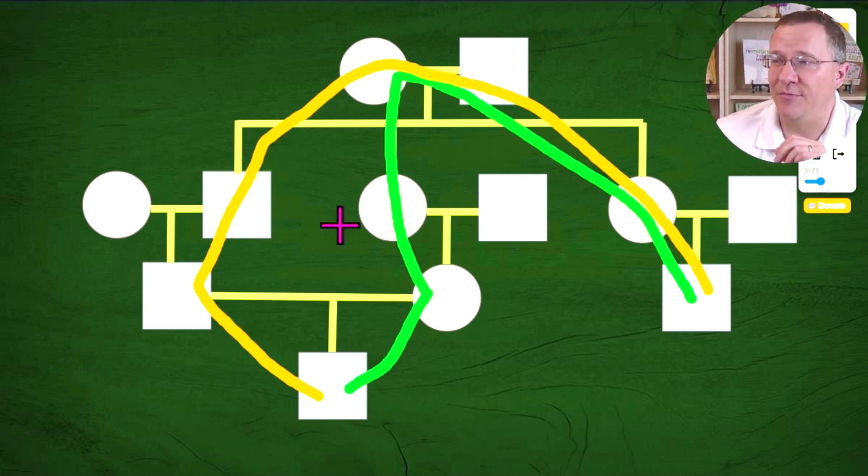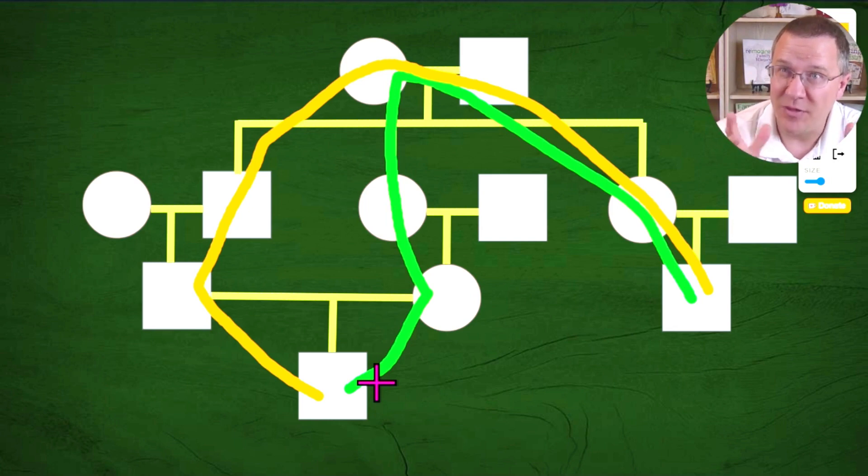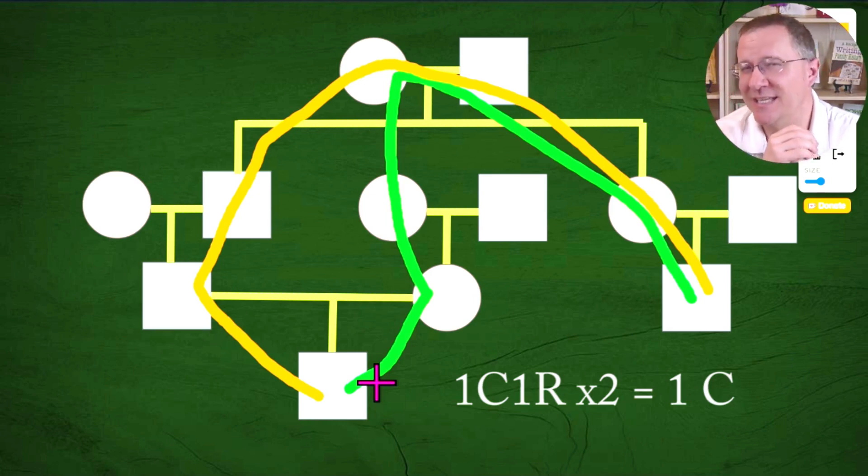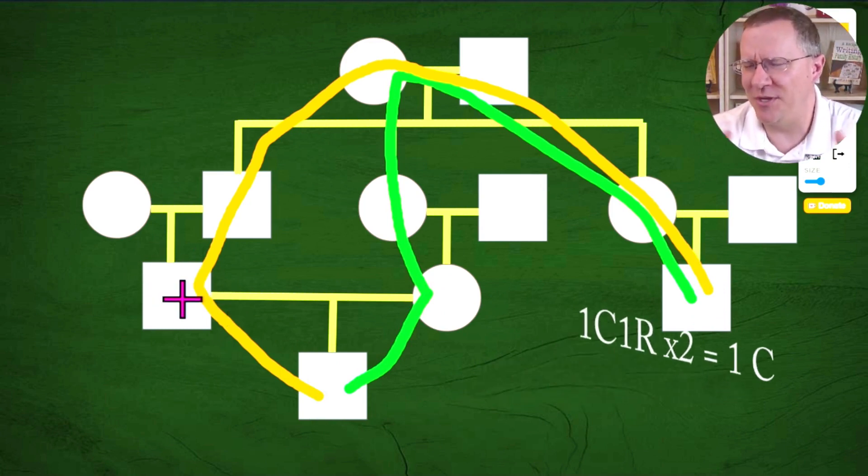And so this is where trying to keep these relationships separate can get a little confusing. In this case, we have two lines of relationship between our viewer and their first cousin once removed. And they both happen to be first cousin once removed. So they are double first cousin once removed, which means they would share the same amount of DNA as a double first cousin once removed. Now how much DNA is that? Well, that's actually the same amount of DNA as a first cousin. So this first cousin once removed to them shares the same amount of DNA on average as each one of their first cousins, which is pretty cool when you're thinking about it.